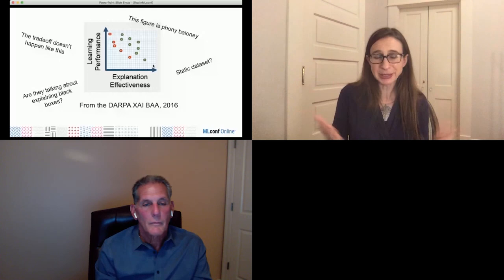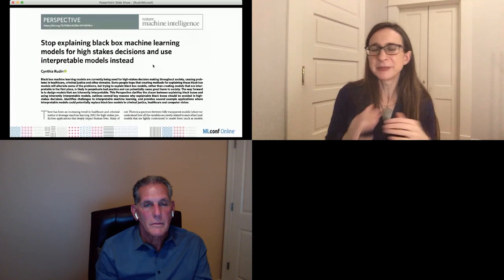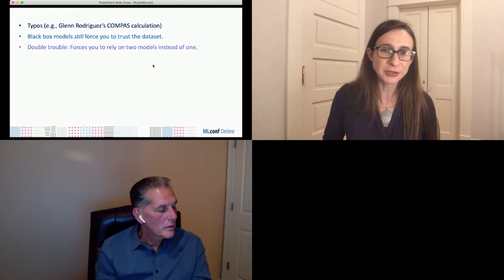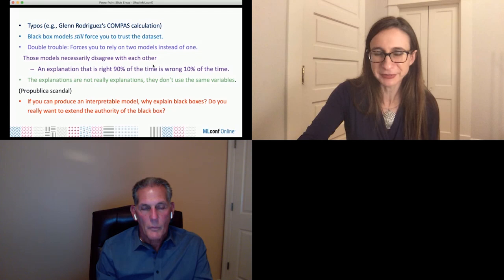I wrote a paper called 'Stop Explaining Black Box Machine Learning Models for High Stakes Decisions and Use Interpretable Models Instead' — it used to be called 'Please Stop Explaining' but they had me eliminate the 'please,' so it's a bit more direct. It goes through all the arguments: typos cause problems with black box models, they still force you to trust the data set, they get you into double trouble requiring two models that disagree, explanations are really just approximations that don't use the same variables, the ProPublica example, and finally — if you can produce an interpretable model, why explain a black box? I personally haven't found any reason why we should be using black boxes, especially for high-stakes decisions.